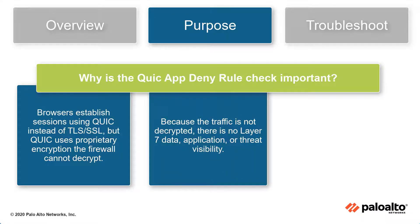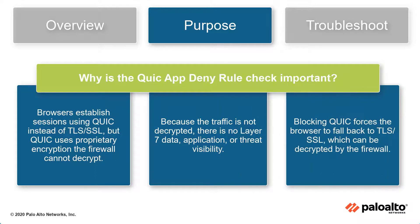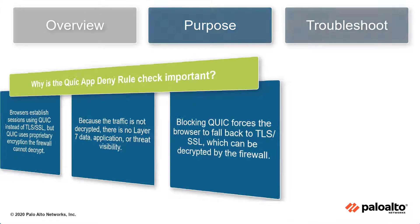Since the traffic from the client browser to the web server is not decrypted, there is no Layer 7 data, application, or threat visibility. Blocking QUIC forces the browser to fall back to TLS/SSL, which can be decrypted by the firewall, allowing it to take the necessary action on the security rule based on application and security profiles.